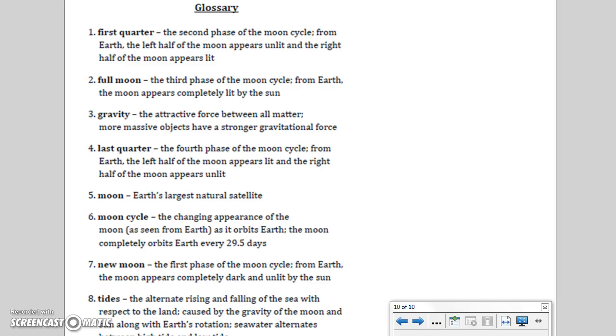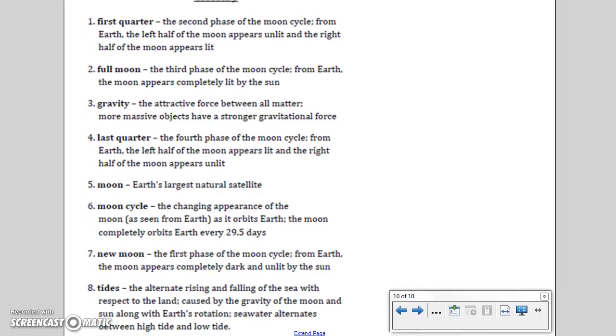New moon: the first phase of the moon cycle. From Earth, the moon appears completely dark and unlit by the sun. Tides: the alternate rising and falling of the sea with respect to the land, caused by gravity of the moon and sun, along with the Earth's rotation. Seawater alternates between high and low tides.